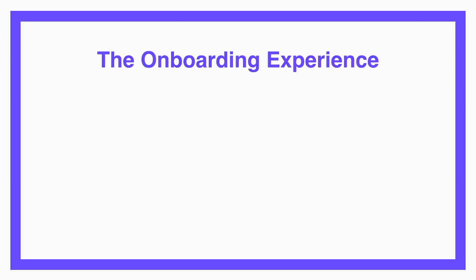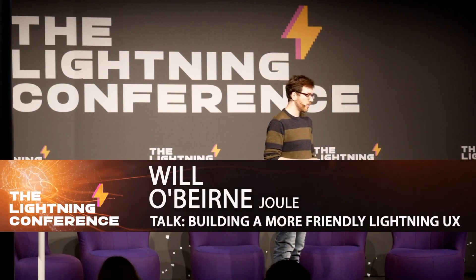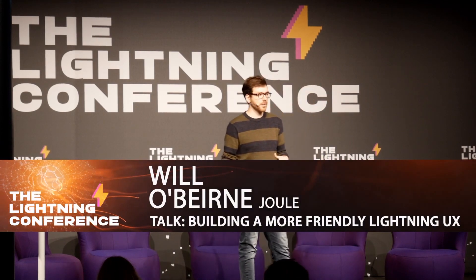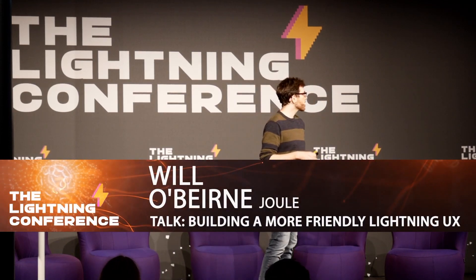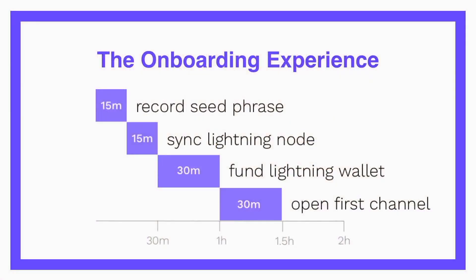You start with the typical onboarding. A user flow probably looks something like this — maybe in different orders, maybe you skip a step. But typically, a user will record their seed phrase, sync the Lightning node — hopefully 15 minutes with Neutrino, or a few hours from scratch — send an on-chain transaction to a Bitcoin address their wallet controls, then open their first channel. Overall, this experience can take upwards of hours, which is not great. People come to Lightning expecting speed, and oftentimes you just end up waiting around.